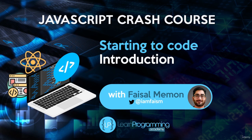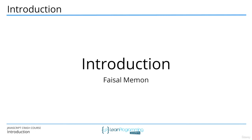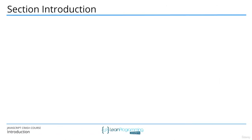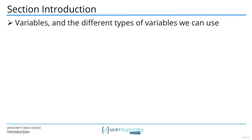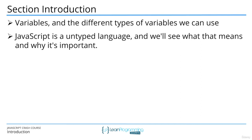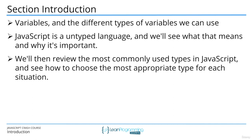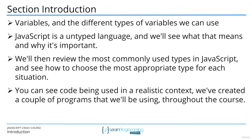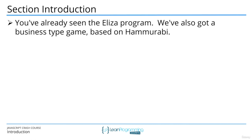In the next section, we previously had a brief look at the JavaScript language and wrote code for the Eliza program. Now we are going to look at the language in more detail, starting by discussing variables and different types of variables. JavaScript is an untyped language and we will see what that means and why it's important.